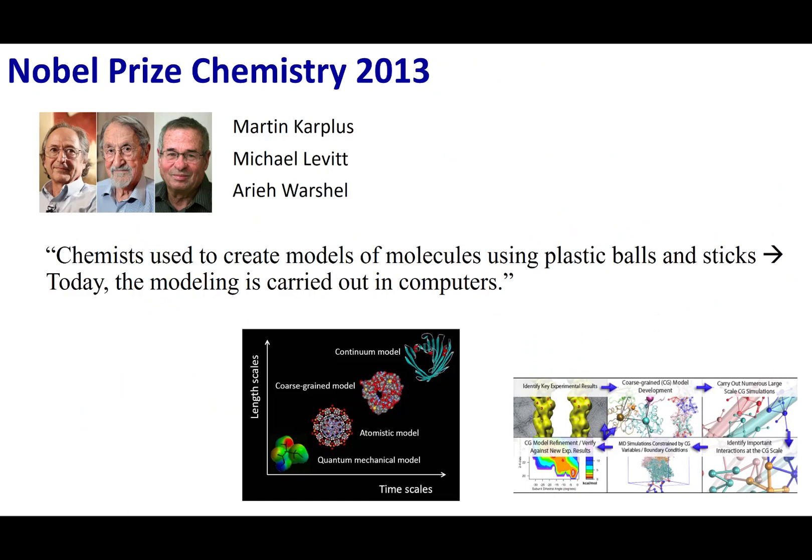Now, to end this chapter, I want to talk about the Nobel Prize winners in 2013. And that was Karplus, Levitt, and Warshel. And they got their Nobel Prize for modeling chemical compounds.